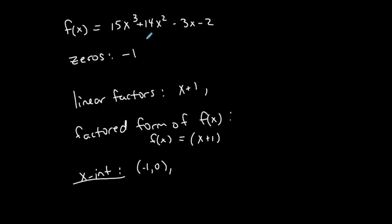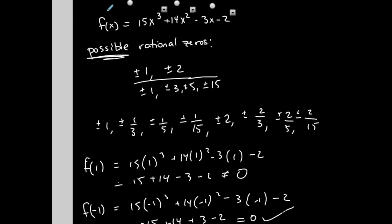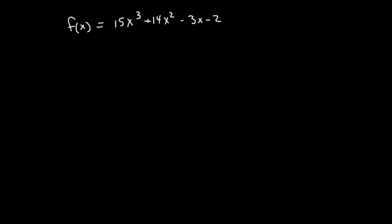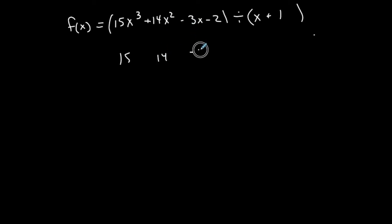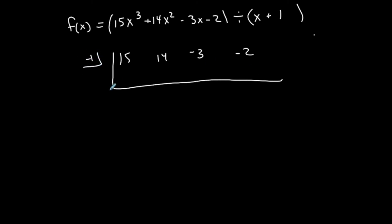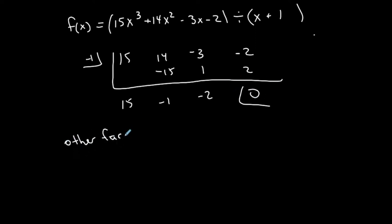To find the other factors, I'm going to use synthetic division. I'll divide this function by x plus 1, since negative 1 was my zero. The coefficients are 15, 14, negative 3, negative 2, and negative 1 goes in the box. Bring the 15 down, multiply diagonally, add vertically — the remainder is zero as expected. My other factor is 15x squared minus x minus 2.